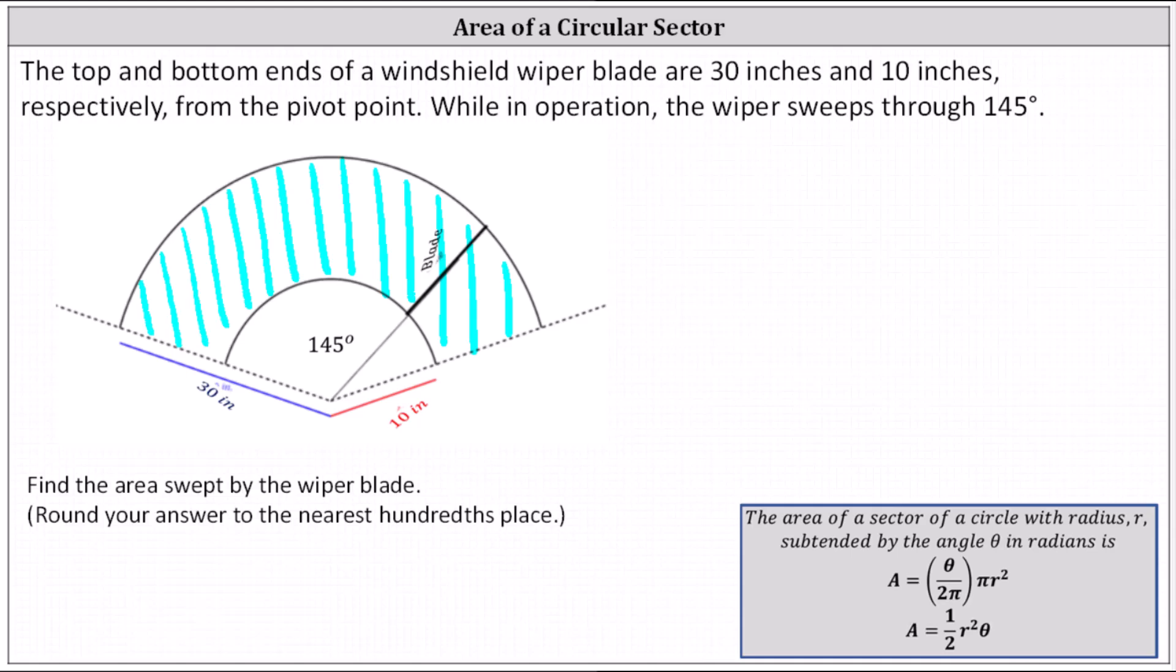Let's let the radius of 30 inches be r sub 1, and the radius of 10 inches be equal to r sub 2.